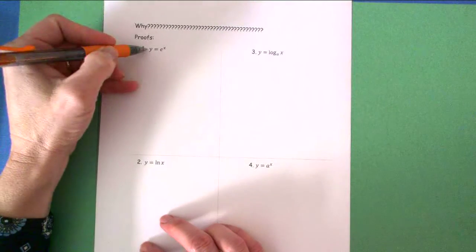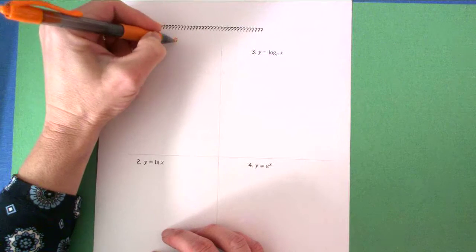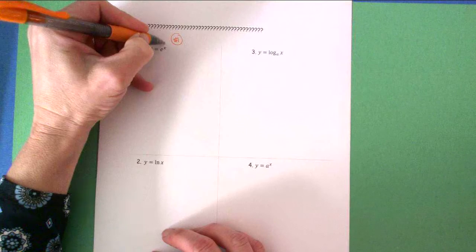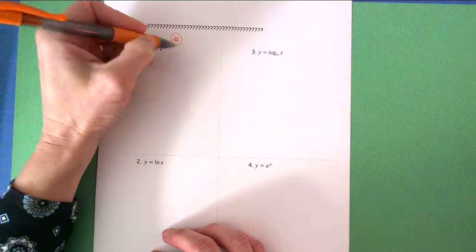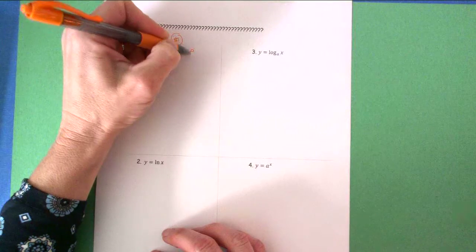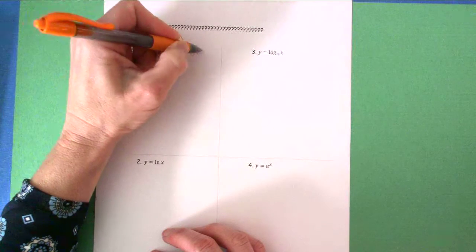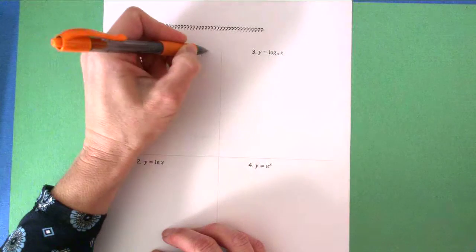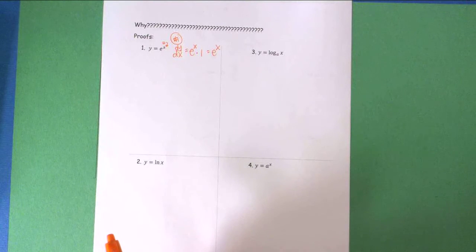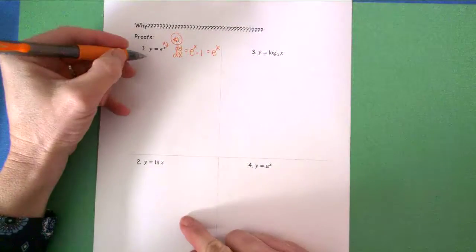Let's start by just using the shortcut. If I use formula number one from yesterday, the derivative of e^u — again this would be my u — the derivative would be dy/dx equals e^u times the derivative of u, which is just e^x. But why? Why is the derivative of e^x itself? We're going to go way back to the beginning of chapter three with this formula.